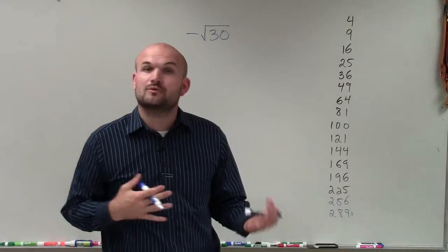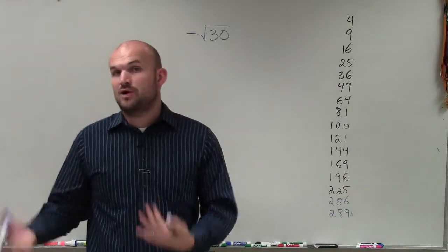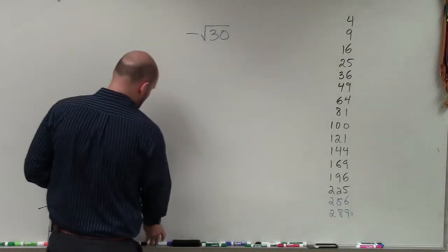So to do that, one of the ways we can work this out is rewriting 30 as a product of its prime factors. So basically what we can do is break down the number 30 into a product of its factors.